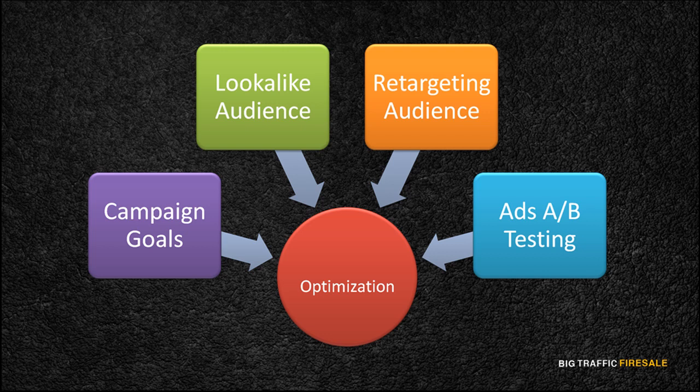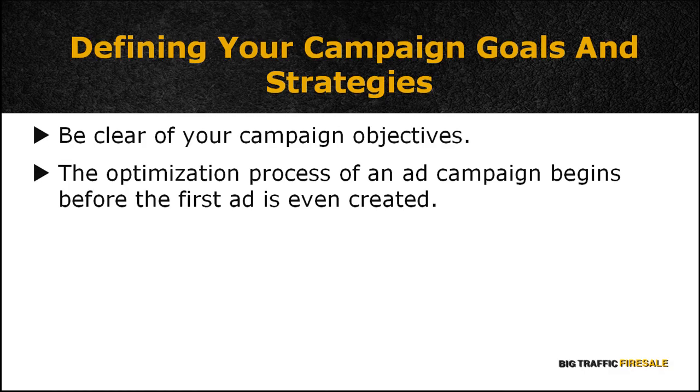There are four critical steps to your Facebook ads optimization: 1. Defining your campaign's goals and strategies, 2. Refining your look-alike audience, 3. Narrowing down your retargeting audience, 4. Facebook ads A-B testing. Let's discuss the first step to optimize your Facebook ads, which is defining your campaign goals and strategies.